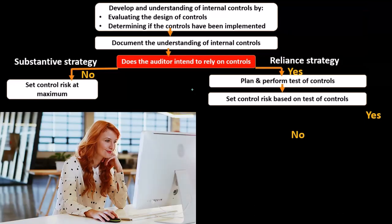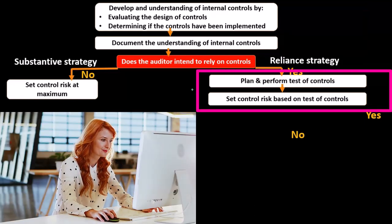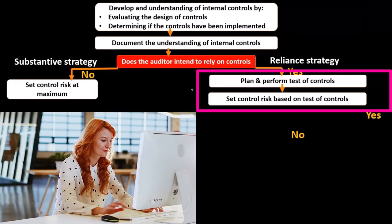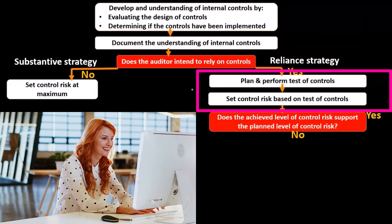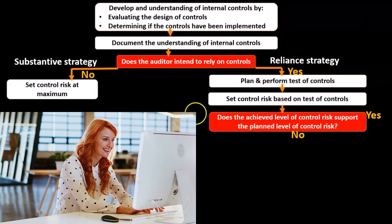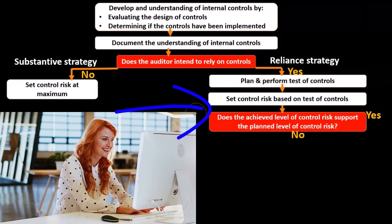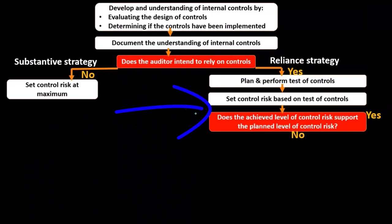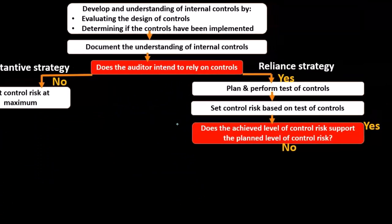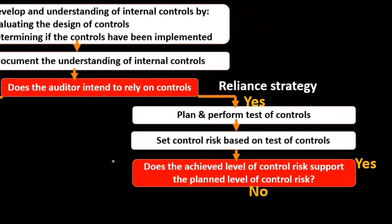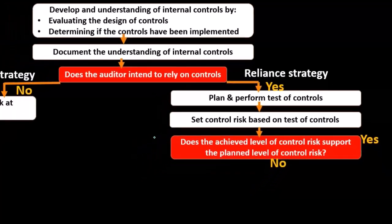We set the control risk based on the test of controls. Once we test the controls, we then ask ourselves another question: does the achieved level of control risk support the planned level of control risk? In other words, does the control risk we assessed after testing match what we determined during planning?